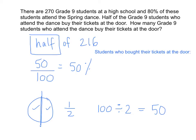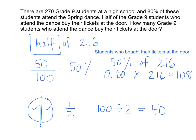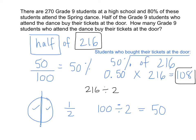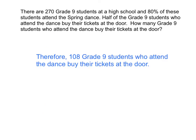Can we use the same strategy to figure out what 50% of 216 is? What's 50% as a decimal? 50 divided by 100 is equal to 0.50, and we're going to multiply that by 216. You can use your calculator. When you punch this in, we get an answer of 108. So 108 students bought their tickets at the door. Does that number make sense? If there are 216 students total that attended the dance, is 108 half of 216? Let's check: 216 divided by 2 gives us 108, just like we found earlier. Therefore, 108 grade 9 students who attend the dance buy their tickets at the door.